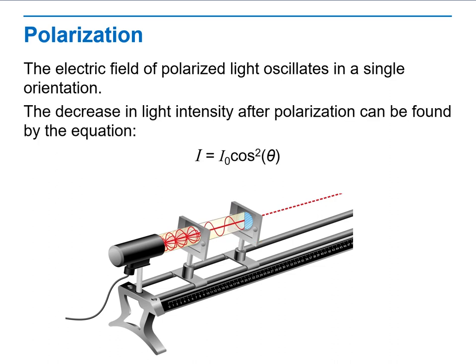As you can see, the decrease in light intensity after polarization can be found by the equation I equals I₀ cosine squared theta.